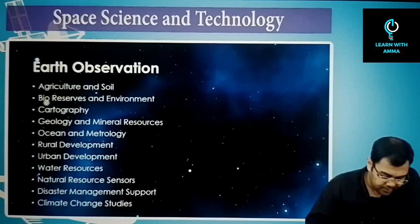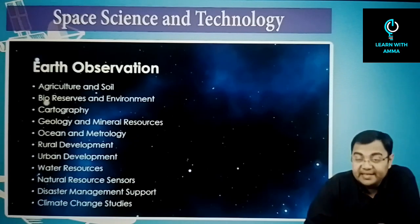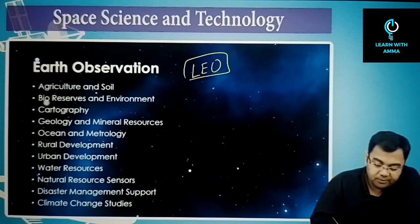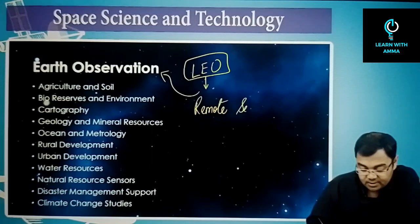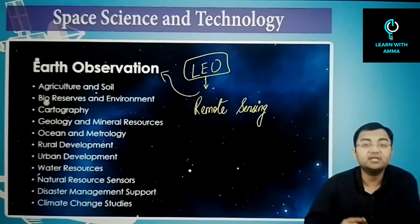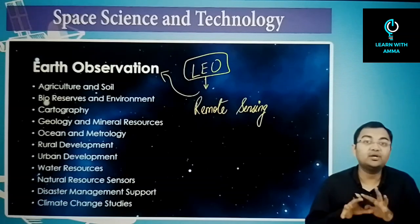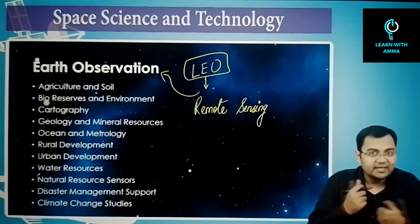Looking at applications for low earth orbit, these satellites are earth observation satellites, also known as remote sensing satellites. They are called remote sensing satellites because they are remotely observing the earth from orbit.